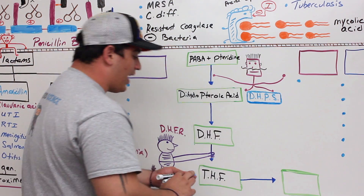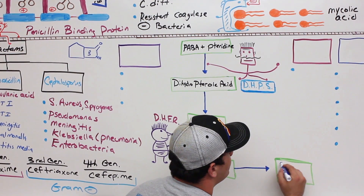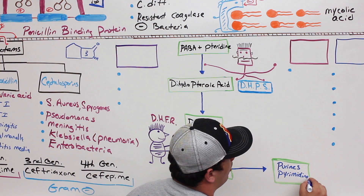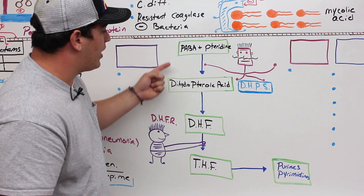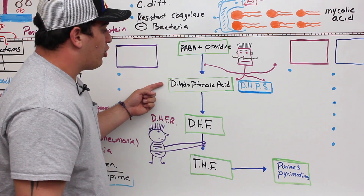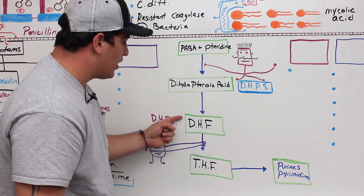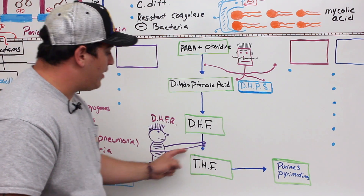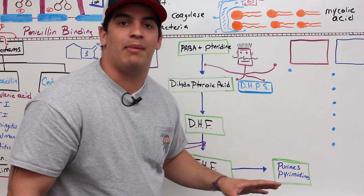Tetrahydrofolic acid is important because it helps in the synthesis of purines and pyrimidines. What are these components of? DNA. So this whole pathway — from para-aminobenzoic acid to dihydropteroic acid, then to dihydrofolate, then to tetrahydrofolate — ultimately leads to the building blocks needed to make DNA.